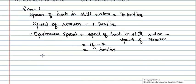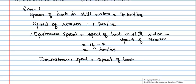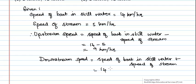Similarly, we can find downstream speed, which is equal to speed of boat in still water plus speed of stream, which is equal to 14 plus 5, and it is equal to 19 kilometers per hour.